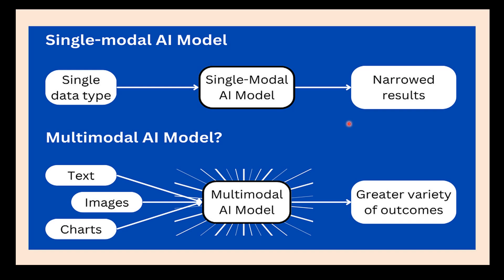Multimodal AI refers to the type of artificial intelligence that can process and integrate data from multiple sources or modalities such as images, audio, text, and sensors. This allows the system to have a more complete and nuanced understanding of its environment and the tasks it needs to perform.